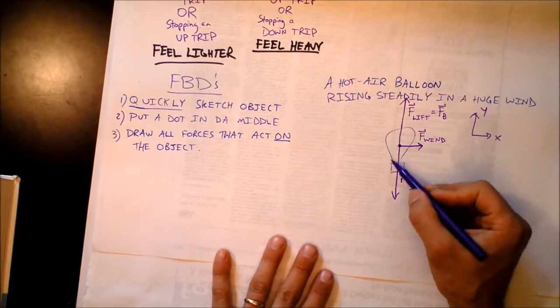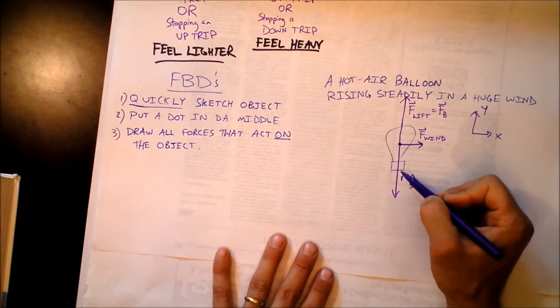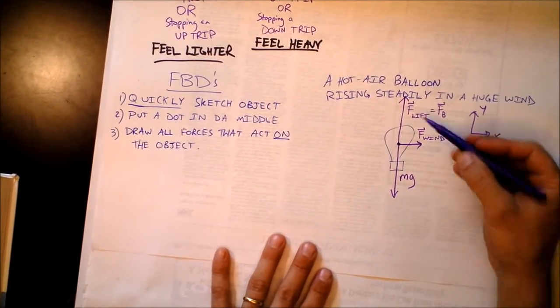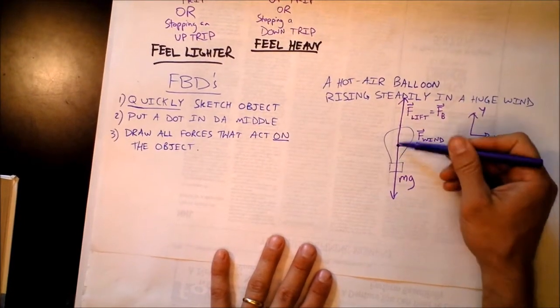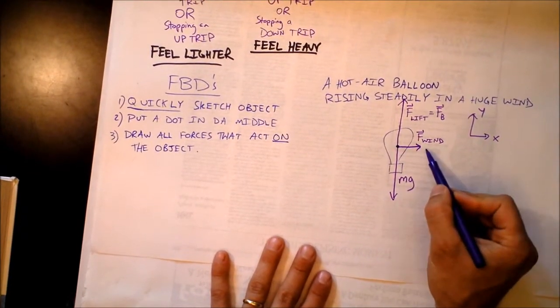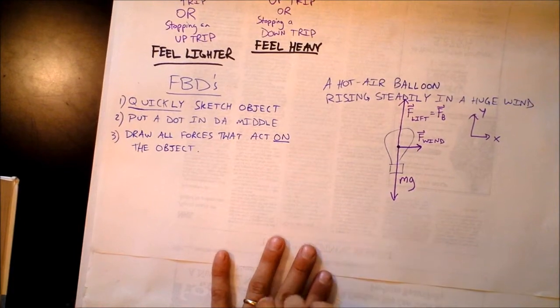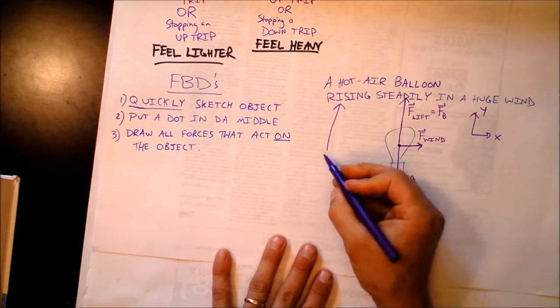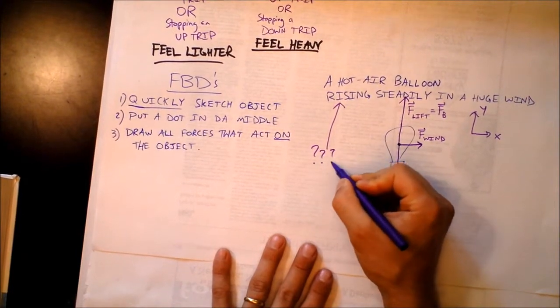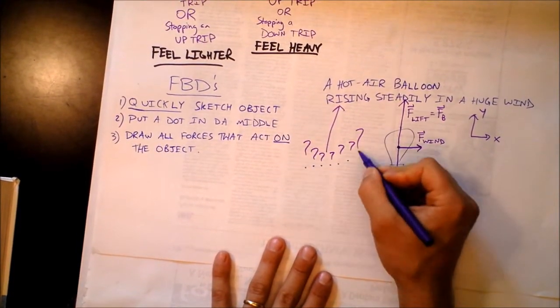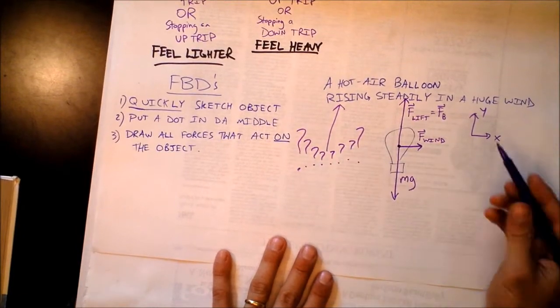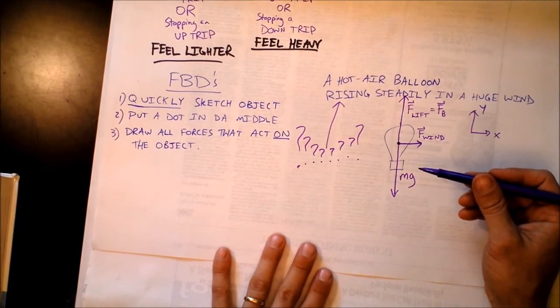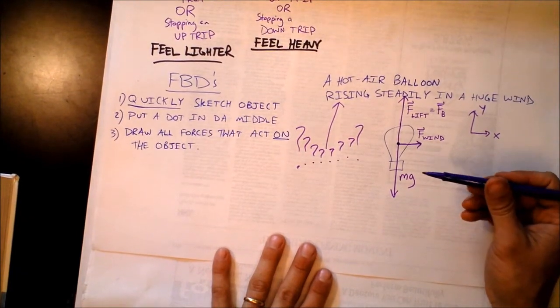So what we want to do is we want to look at this balloon and figure out which way it's moving. I think it's pretty clear that this force is canceling that force and the net force in the balloon is that direction. So here's the tricky thing though. I said the balloon was rising steadily. Can you see from the free body diagram that that balloon is rising steadily? No. No, you can't tell at all.